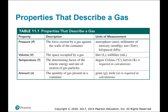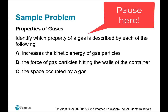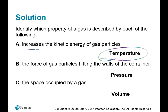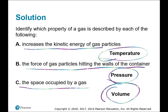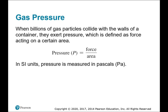Here's a table of all the properties that describe a gas: pressure, volume, temperature, and amount in moles. Temperature increases the kinetic energy of gas particles. Pressure is the force of gas particles hitting the walls of the container, and volume is the space occupied by a gas. When billions of gas particles collide with the walls of a container, they exert pressure, defined as force divided by area. In SI units, pressure is measured in pascals.